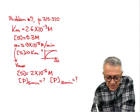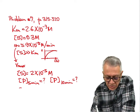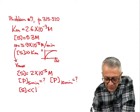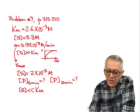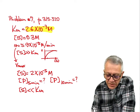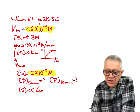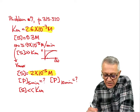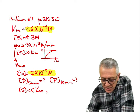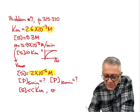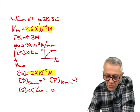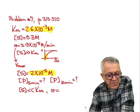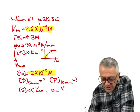We now have a substrate concentration much smaller than the Km. The Km is still 2.6×10⁻³ molar. When we have a situation like that, it is a first-order reaction — we are working in the linear region of the curve.